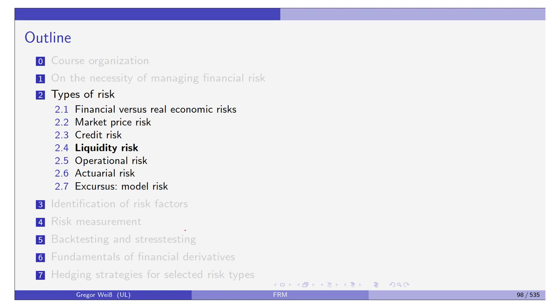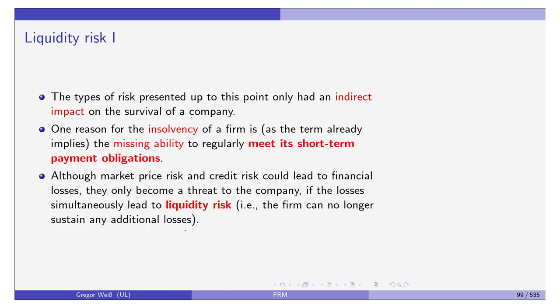Now let's talk about liquidity risk. The risks seen so far — market risk and credit risk — only have an indirect impact on the survival of a company. Companies will incur financial losses, but you will never have a company that only generates profits every day. These losses do not necessarily threaten the existence of the company; your net income may simply be slightly lower.